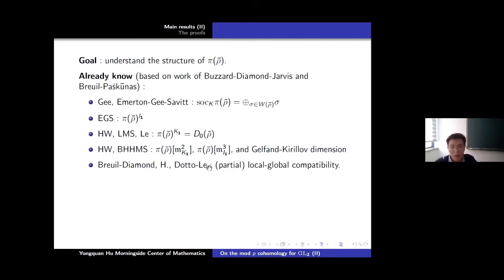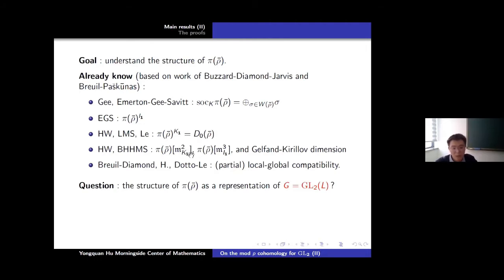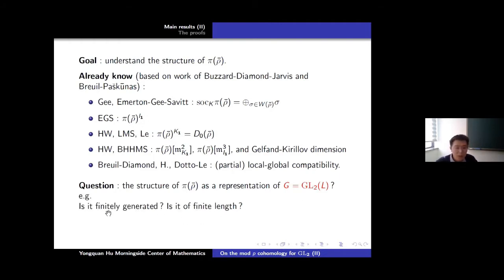This is mentioned in the talk of Christophe Breuil. But you will see that all of these results are about the restriction of π(ρ̄) to K or to the Iwahori, or we only know a very small finite-dimensional piece of the representation. So you may ask the question: what is the structure of π(ρ̄) as a representation of the whole group GL2(L)? In particular, you might ask if this representation is finitely generated, and if it has finite length. For mod-p representations, we don't know that finitely generated implies finite length.